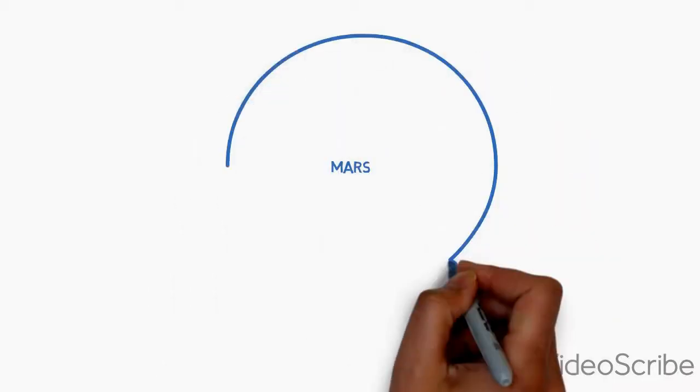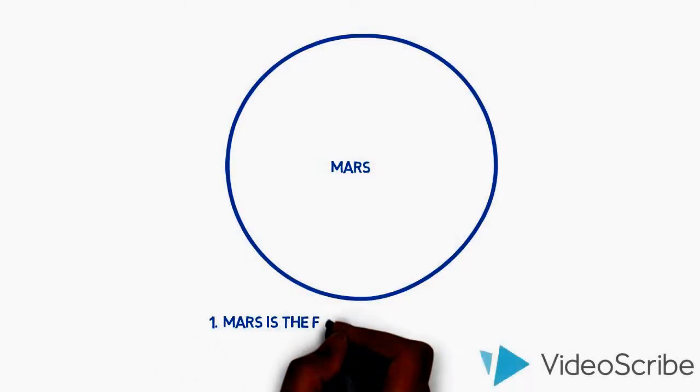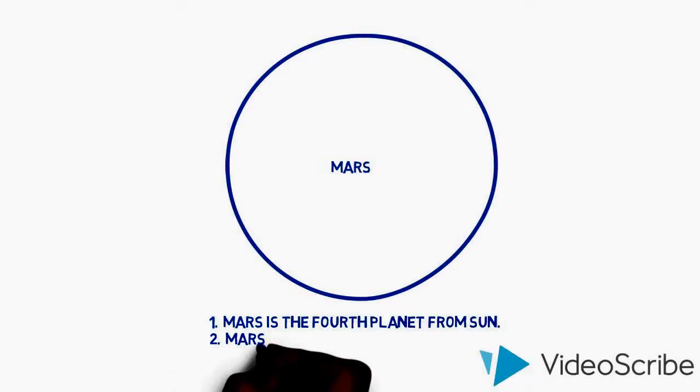Mars. Mars is the fourth planet from Sun. Mars is the second smallest planet in the solar system. Mars is named after Roman God.